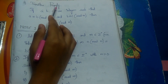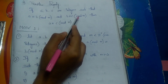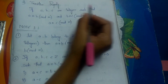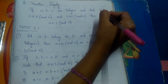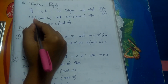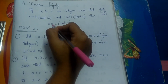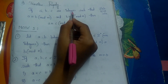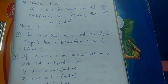Third, the transitive property: if a, b, c are integers such that a is congruent to b modulo m and b is congruent to c modulo m, then a is also congruent to c modulo m. Just as in equality, if a = b and b = c then a = c, the same applies in congruences. These are the three properties applicable to congruences.